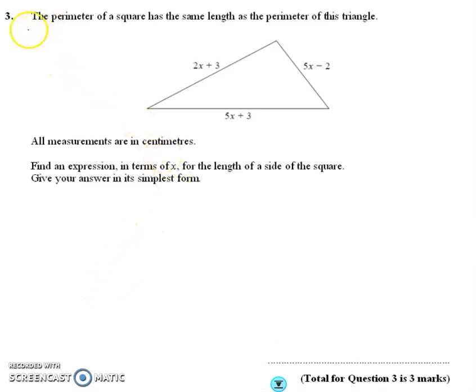Okay, question 3. So it's telling us the perimeter of a square is the same length as the perimeter of this triangle, and here we go, we've got the perimeter in algebra. The final expression tells you the length of a side of a square. Okay,